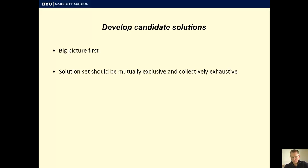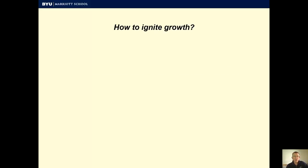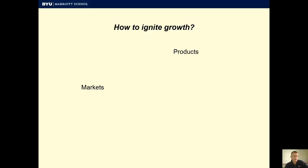So if our problem is how to ignite growth, let's start at the very big picture. Growth could be about: do we have the right products, and how do we grow product sales? Or are we in the right markets — slow growing, stagnating, or rapidly growing? These two are a great way to frame a growth problem, and notice that they're exclusive. Products and markets are both important, but they may be independent.